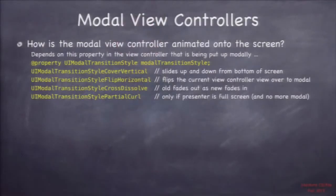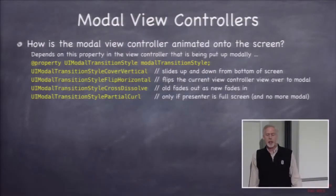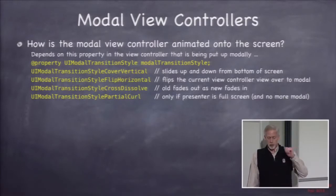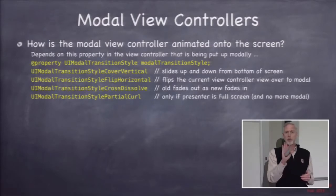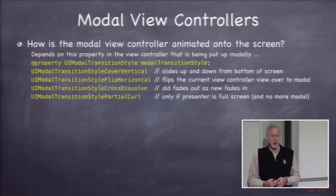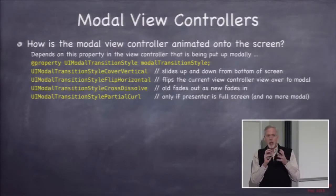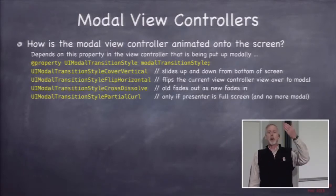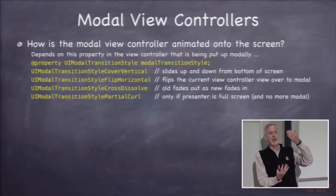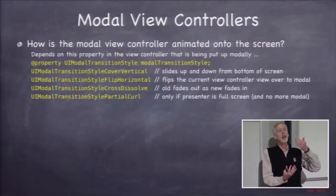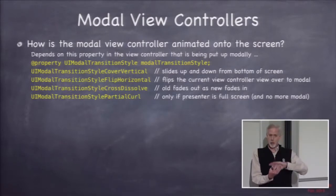How does the modal view controller appear on screen? That's set by the modal transition style property in the presented view controller. It has various choices: cover vertical slides up from the bottom as shown in the demo, flip horizontal flips the new one in horizontally, cross dissolve fades the new one in, and partial curl curls up the current one and shows the new one underneath — that one's kind of a weird one.